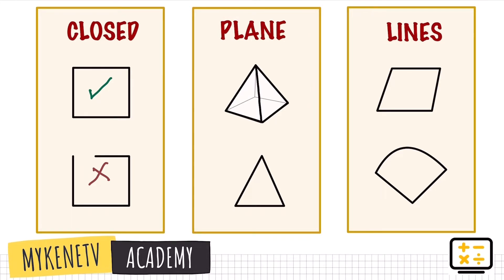Now let's proceed to the second property: 'plane.' Another word for plane is flat. Among these two shapes, which one has a flat surface? Yes — this triangle — because the other one is already a solid figure, or a pyramid.